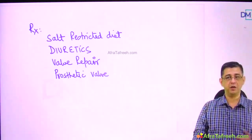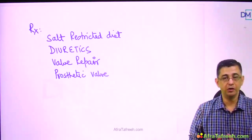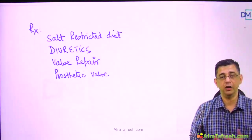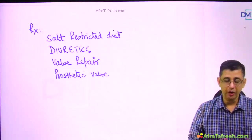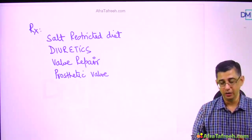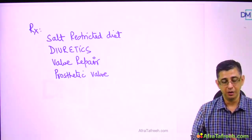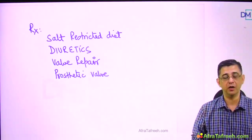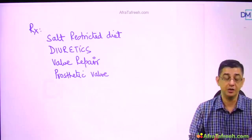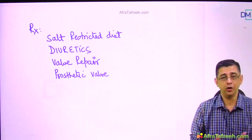The prosthetic valve can be either biological or metallic. The disadvantage of a metallic device is that, despite its good longevity, it requires lifelong anticoagulation. Depending on availability and the patient's capacity, either a prosthetic biological or metallic device can be placed. With a metallic prosthetic valve, lifelong anticoagulation must be taken into consideration.